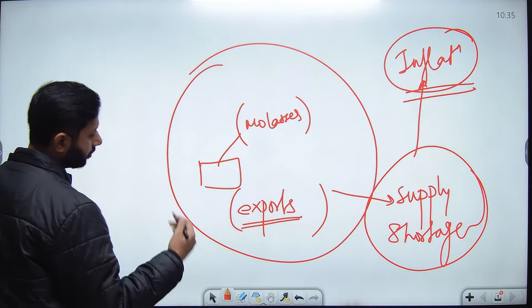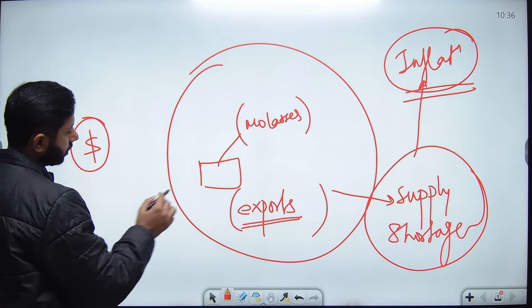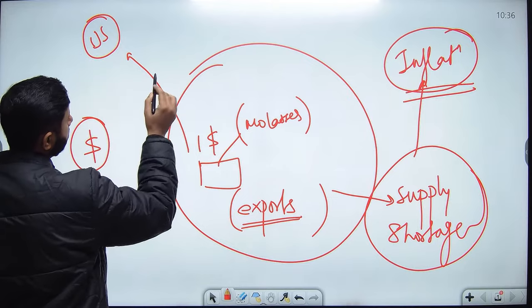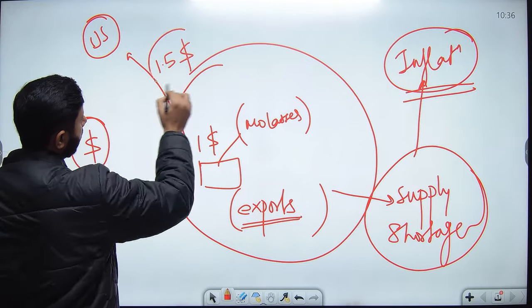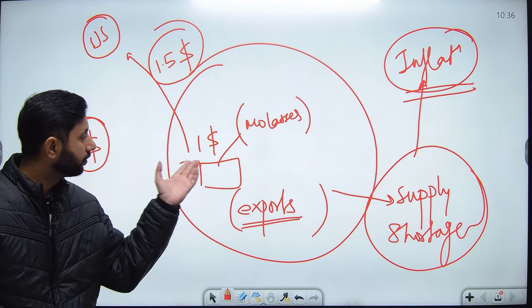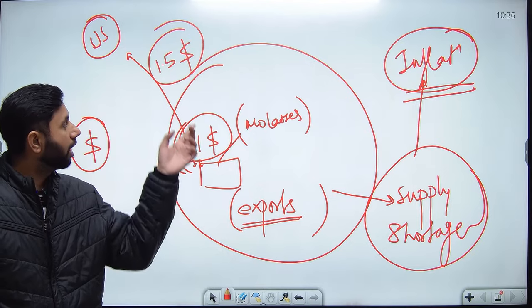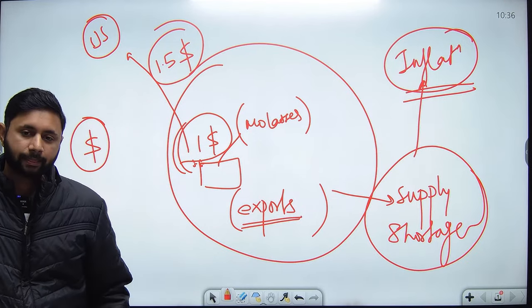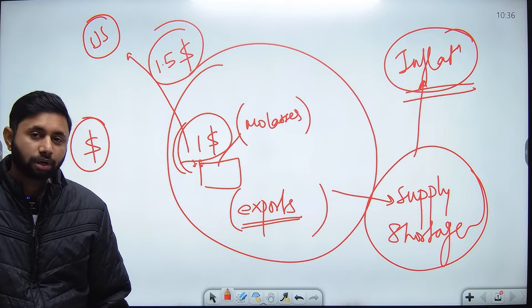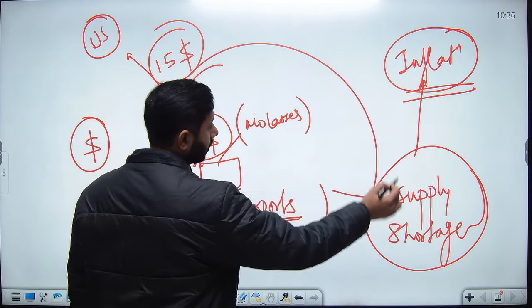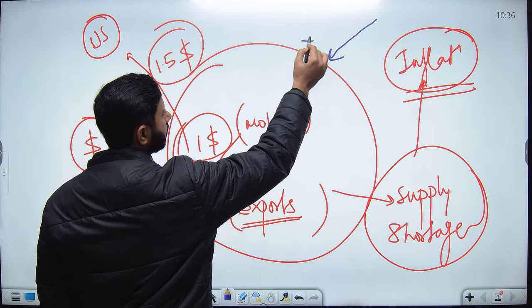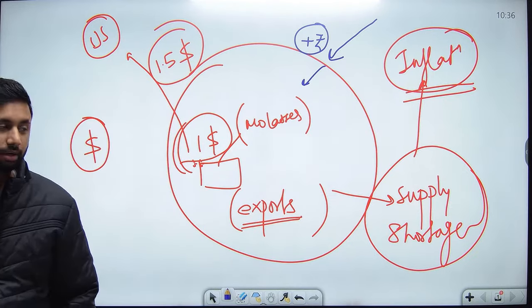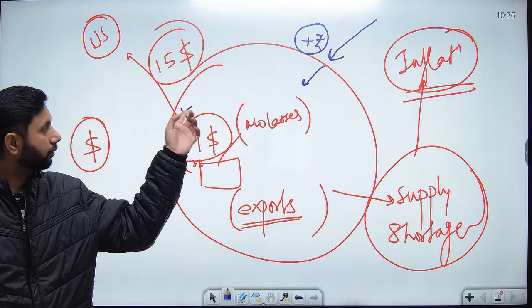For example, if a product costs $1 and you want to export it to the US, it will go at $1.50 because 50% is the export duty — 50% of the MRP is added to the price before customs authorities allow it to leave. Import duty, by contrast, is imposed on products coming from outside before they enter the domestic market.